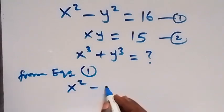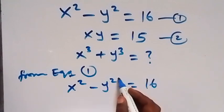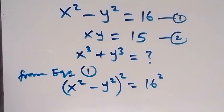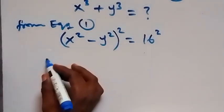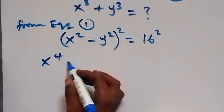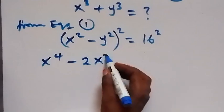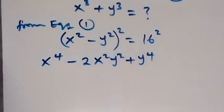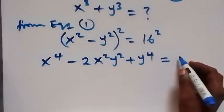Now let's square both sides of this equation. The expansion gives us x to the power of 4, because we square x squared that's x to the power of 4, then minus 2 times x squared times y squared, that's minus 2x²y², then plus y to the power of 4, since squaring minus y squared gives us plus y to the power of 4.